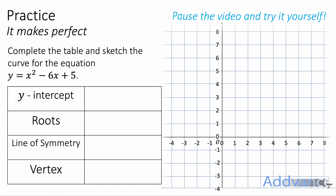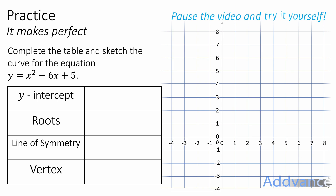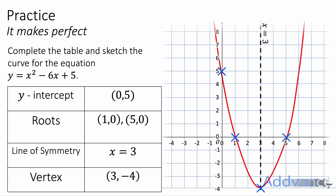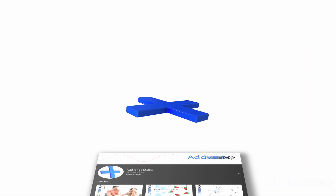I've shown you three examples — now it's time for you to try one yourself. Complete the table and sketch the curve for y equals x squared minus 6x plus 5. Pause the video now and do this in your own time. It should take about 5 minutes. When you're ready, I'll reveal the answers in 3, 2, 1. That's what the equation looks like — a nice smooth sketch. Did you get it correct? Let me know how well you did in the comments below.